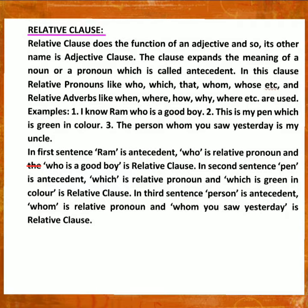Examples. Number one: 'I know Ram, who is a good boy.' Number two: 'This is my pen, which is green in color.' Number three: 'The person whom you saw yesterday is my uncle.' In the first sentence, Ram is the antecedent; 'who' is the relative pronoun and 'who is a good boy' is the relative clause. In the second sentence, pen is the antecedent; 'which is green in color' is the relative clause. In the third sentence, person is the antecedent; 'whom you saw yesterday' is the relative clause.